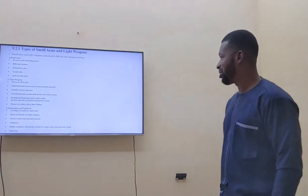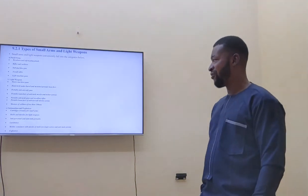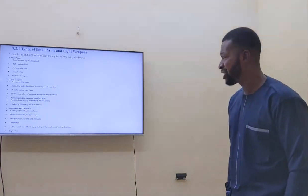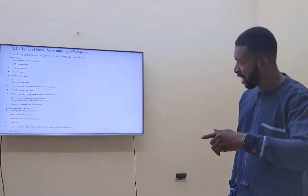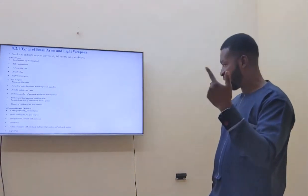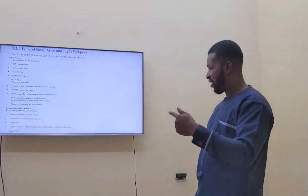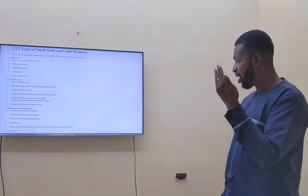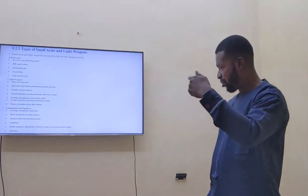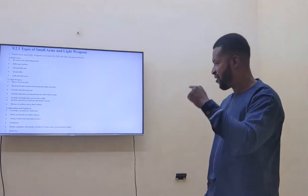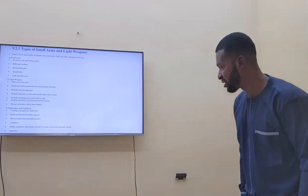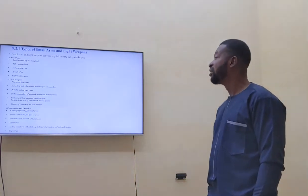Types of arms: small arms and light weapons include revolvers, rifles, combined machine guns, and assault rifles. Light weapons include heavy machine guns, anti-aircraft guns, mortars, and shoulder-launched rocket systems. When you talk about ammunition and explosives, we are talking about cartridges for small arms, shells for light weapons, and anti-personnel and anti-tank mines, among others.